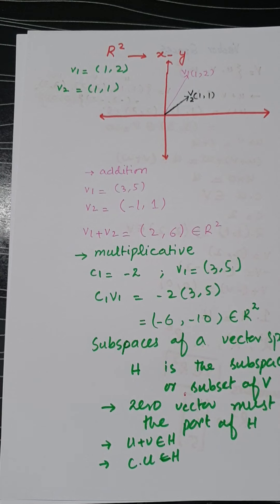The properties are the same as for a vector space — the only difference is that a subspace is a smaller part of the given vector space V. Let's consider different examples to get a better understanding of subspaces.